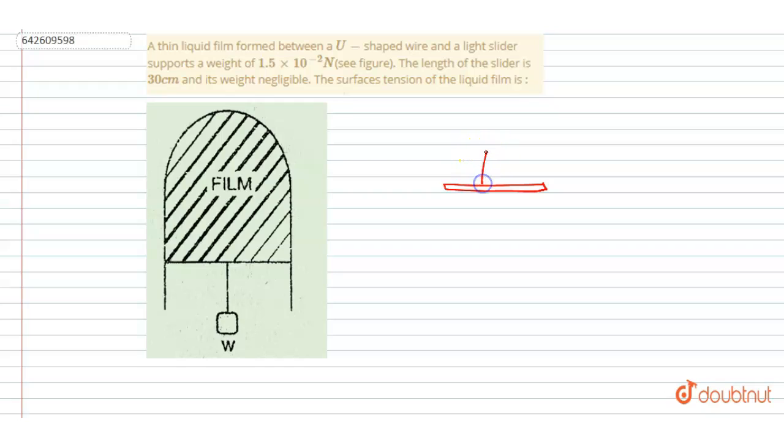I will write the surface tension times this length. This length is 30 centimeters, that is 0.3 meters. So T×L, and since there are two surfaces, I will write 2TL. In the downward direction, there is a tension force which equals W.